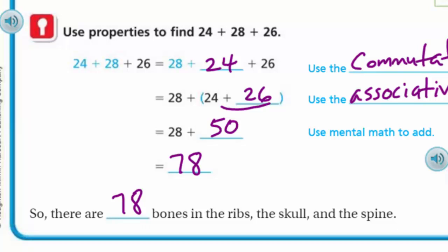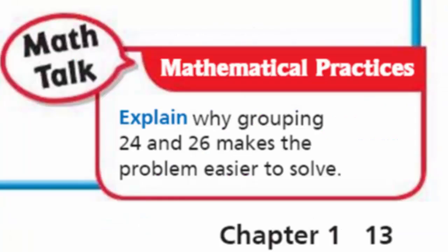Doesn't it? It sure does. It looks like you're taking one from the 26 to add to the 24 so that we have two 25s. Use mental math to add. So now it's really easy because we're just going 78. So there are 78 bones in the ribs, the skull, and the spine. That's a lot of bones. That's how I checked. I seem to remember that the human body has like 206 or 207, something like that. And that the majority of them are actually in the hands and the feet. And there's a whole bunch of them there. Anyway, mathematical practices.